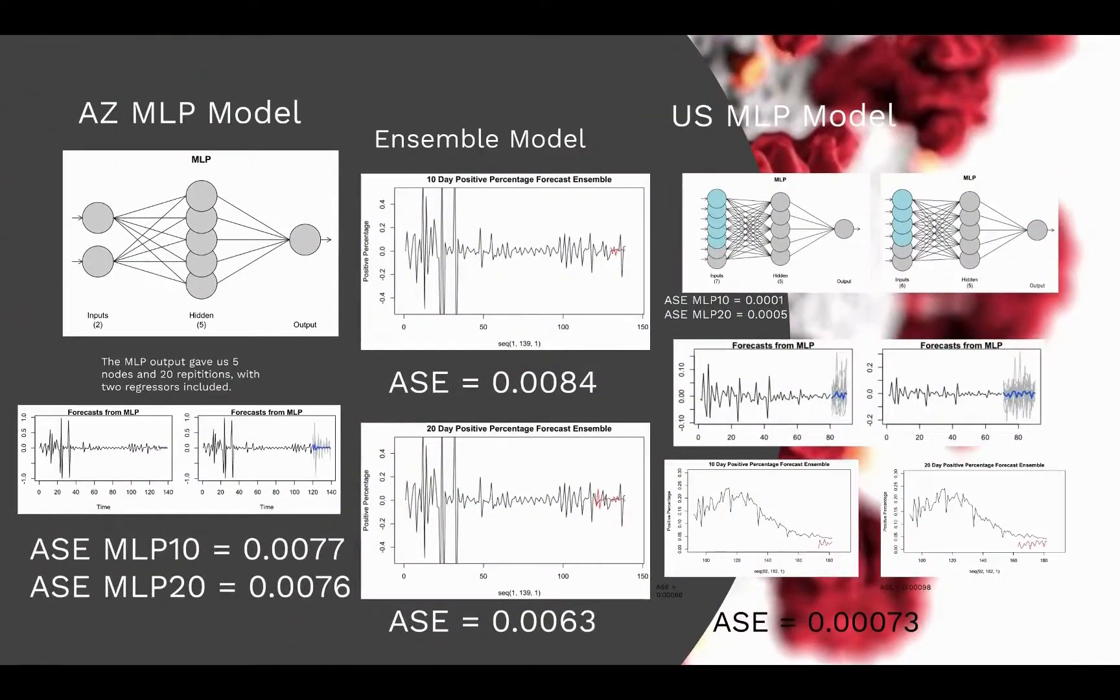And then thirdly we enacted a neural net model with Arizona and the US. Here we can see our neural net model produced a short-term and long-term forecast on the bottom left as well as our respective ASE scores. And then we included our best-performing neural net as well as our best-performing VAR model and combined to create a short-term and long-term forecast in the middle, which you can see their respective ASE scores.